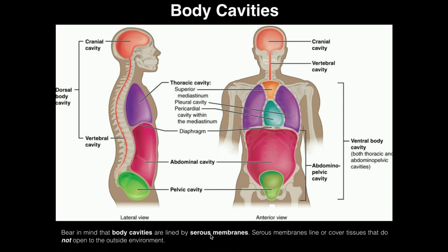Serous membranes are a type of membrane that do not open to the outside, meaning there's no possible opening for the external environment to connect to these membranes. This is in contrast to mucous membranes, which do open to the outside. Serous membranes do not open to the outside, and they line all of these cavities.